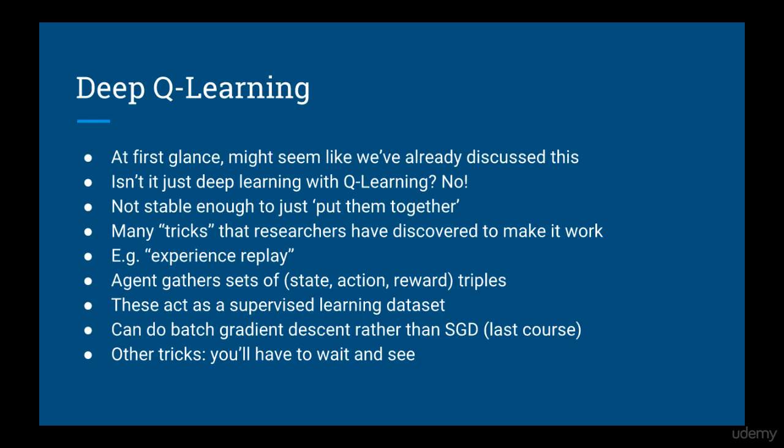Lastly, we'll look at deep Q-learning. At first glance it might seem like we've already done this — deep learning and Q-learning together — but you can't just plug and play deep neural networks into the agents we've built as-is; it's just not stable enough. There are a lot of tricks that researchers have figured out to make this work. One of these tricks is experience replay: as an agent plays an episode, it gathers state-action-reward triples forming a dataset, and rather than doing stochastic gradient descent on one sample at a time, you can calculate the gradient with respect to multiple previous samples, which helps stabilize the cost and hence the gradient. There are other tricks we'll need too, but you'll have to wait and see. I'll see you in the next lecture.